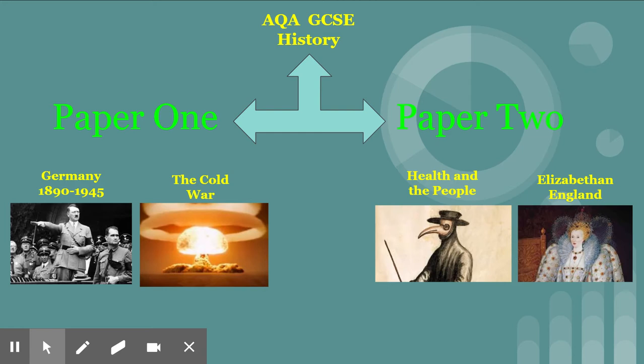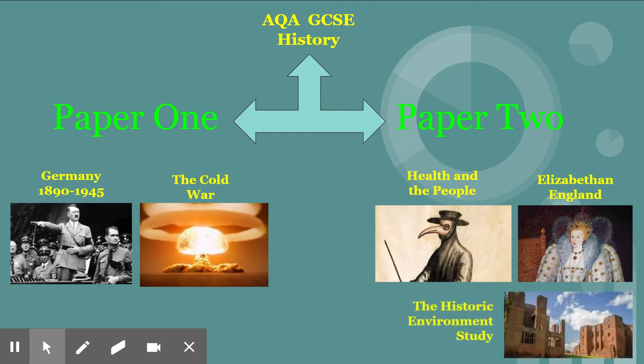Also on paper two, as part of the Elizabeth module, there is a historic environment study. This changes every single year. The current year 11s are looking at Kenilworth Castle. Previous years have looked at the Globe Theatre in London, the English Channel, or Hardwick Hall in Derbyshire. The exam board gives us a specific place to look at, and we know that one of the questions will be about that on the Elizabeth paper. We can look at pre-release materials so that you can answer that really knowingly.